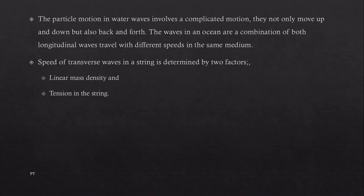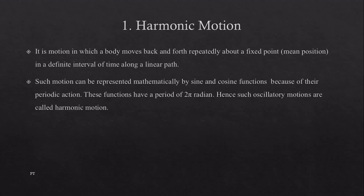The particle motion in water waves involves complicated motion. They not only move up and down but also back and forth. The waves in the ocean are a combination of both longitudinal waves traveling with different speeds in the same medium. Speed of transverse waves in a string is determined by two factors: linear mass density and tension in the string. Now we are going to talk about some basic definitions to understand waves and harmonics.